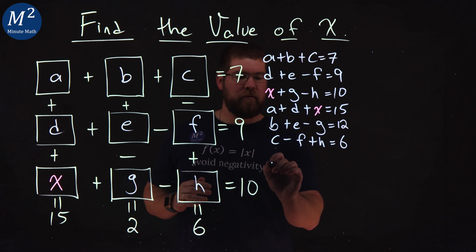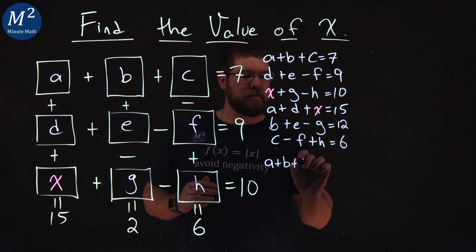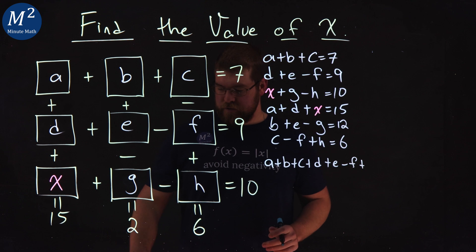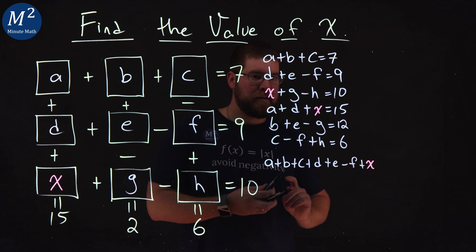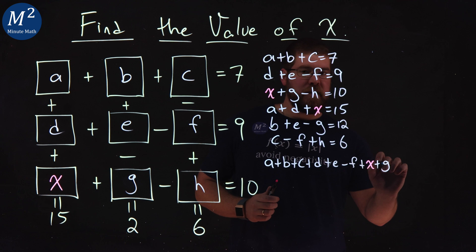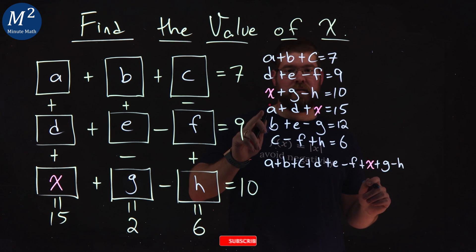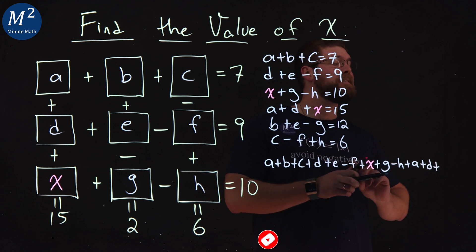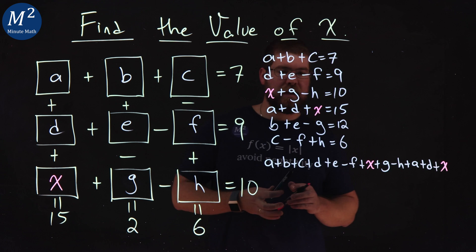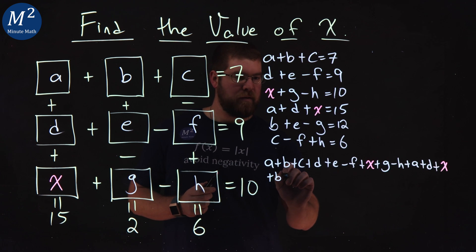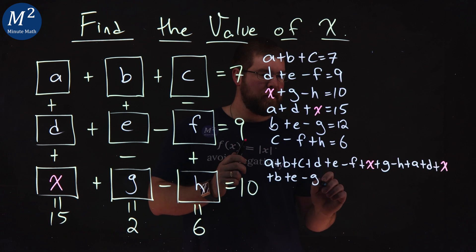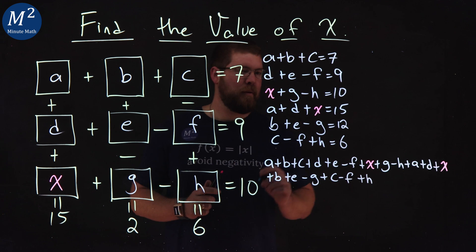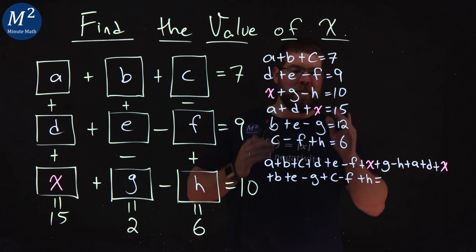So let's stay focused. We have A plus B plus C plus D plus E minus F plus, let's keep the X pink here, X plus G minus H plus A plus D plus X. Second line here, plus B plus E minus G plus C minus F plus H. Now be careful with all of them.